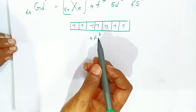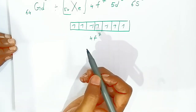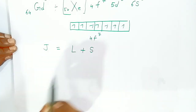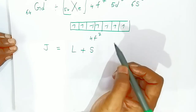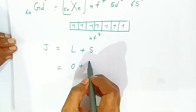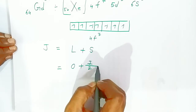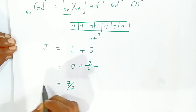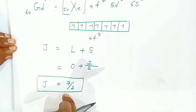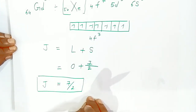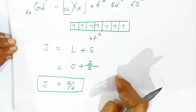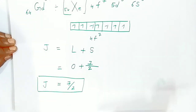Because the f orbital is more than half filled, we use the formula j = L + S. Here L = 0 and S = 7/2, so j = 7/2. Once you know the j value, you can substitute it into the magnetic moment formula to get the final answer. These quantum number calculations are very important. Thank you very much — if you like this video, please share and subscribe.